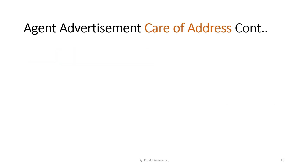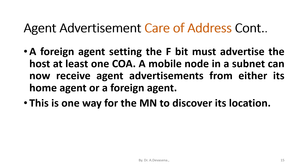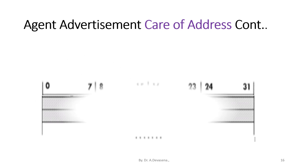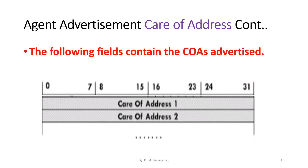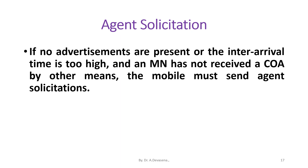A foreign agent setting the F-bit must advertise at least one COA. A mobile node in the subnet can now receive agent advertisements from either its home agent or a foreign agent. This is one way for the mobile node to discover its location. The following fields contain the care-of addresses advertised.